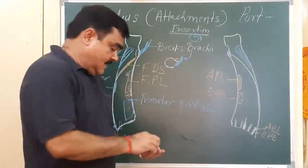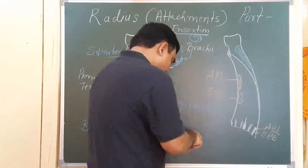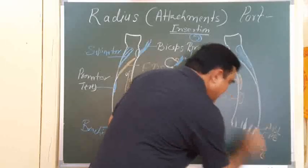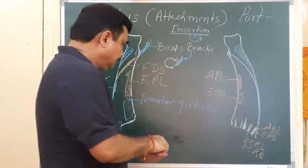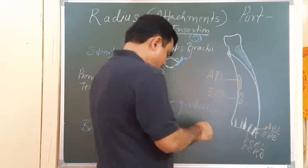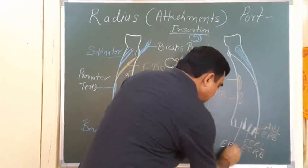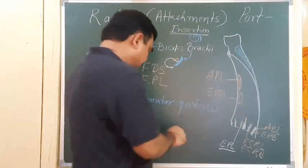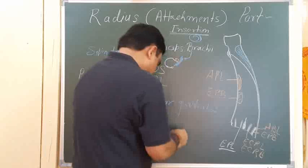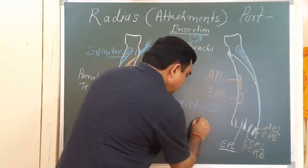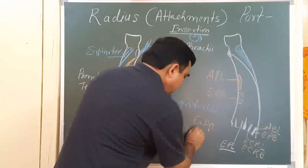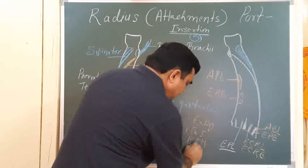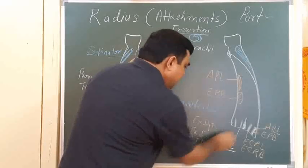In the first groove there is abductor pollicis longus and extensor pollicis brevis tendon. In the second groove there is extensor carpi radialis longus and extensor carpi radialis brevis tendon. In the third groove there is extensor pollicis longus tendon — this groove is known as the oblique groove. In the fourth groove there is extensor digitorum, extensor indicis, posterior interosseous nerve, and anterior interosseous artery.